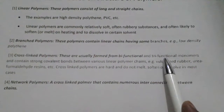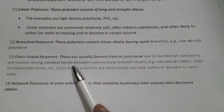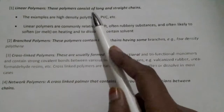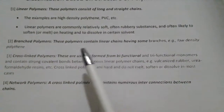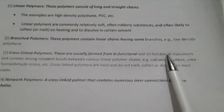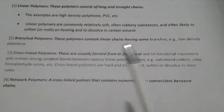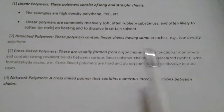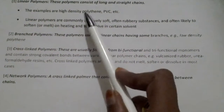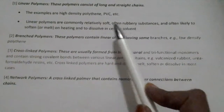Cross-linked polymers are formed from bifunctional and trifunctional monomers. These contain strong covalent bonds between various linear polymer chains. So various linear polymer chains of bifunctional and trifunctional monomers come under cross-linked polymers.